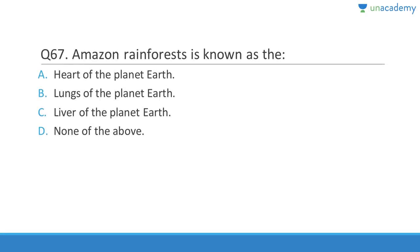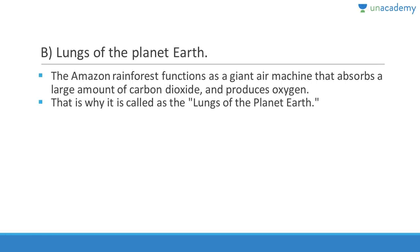Question sixty-seven: The Amazon rainforest is known as the lungs of the planet Earth because it produces so much oxygen. The Amazon rainforest functions as a giant air machine that absorbs a large amount of carbon dioxide and produces a huge amount of oxygen. That is why it is called the lungs of the planet Earth, and we should avoid cutting it down.